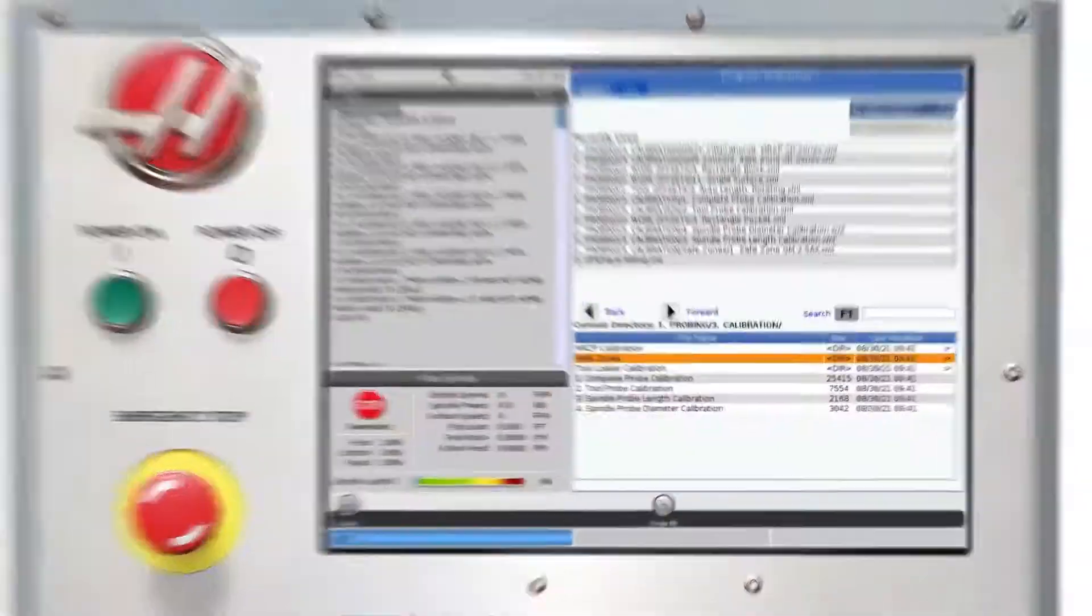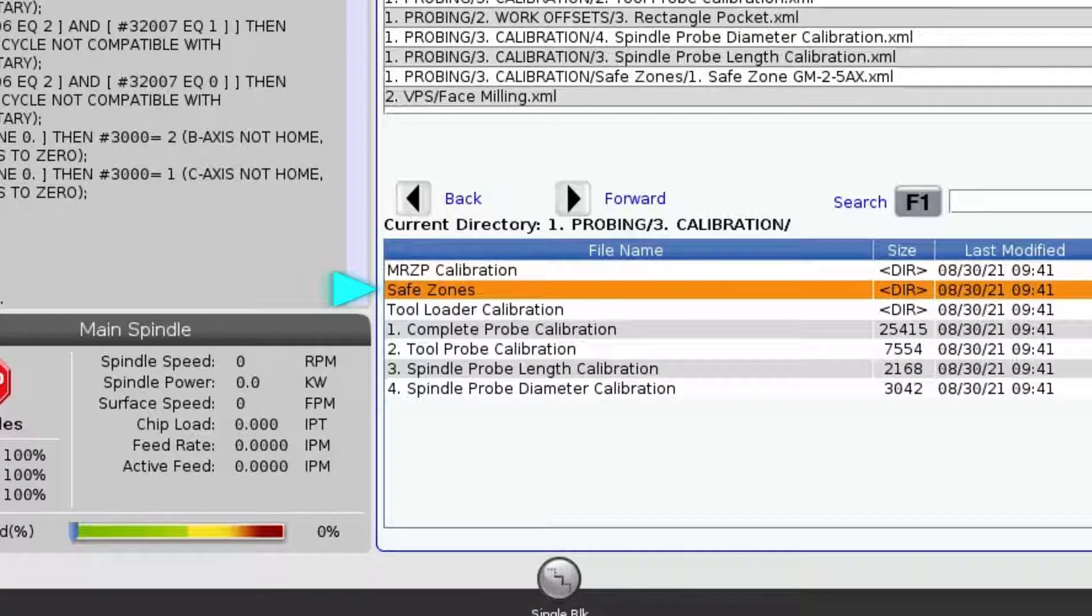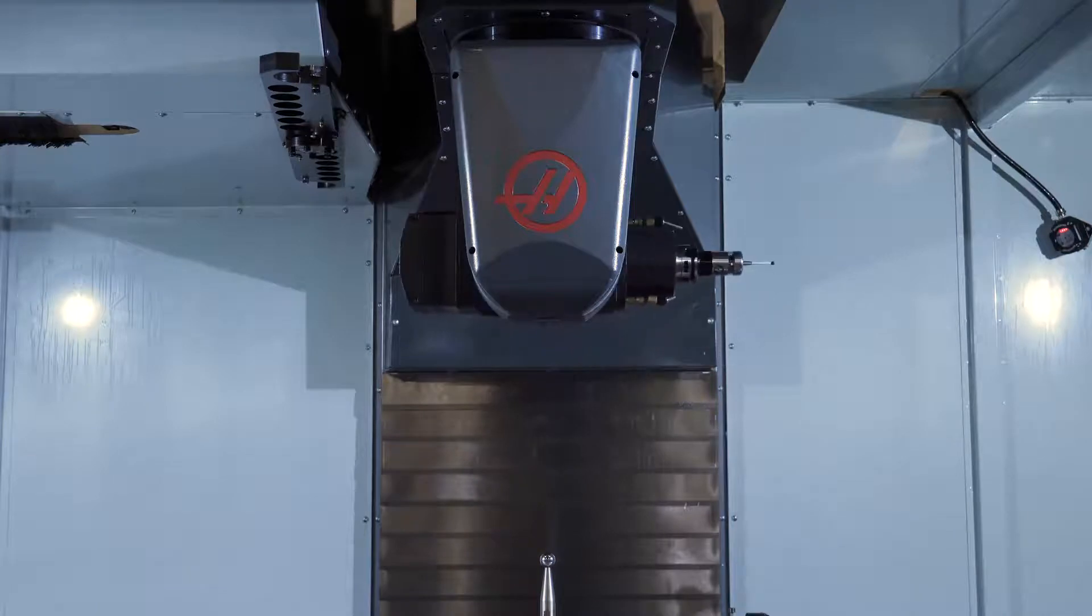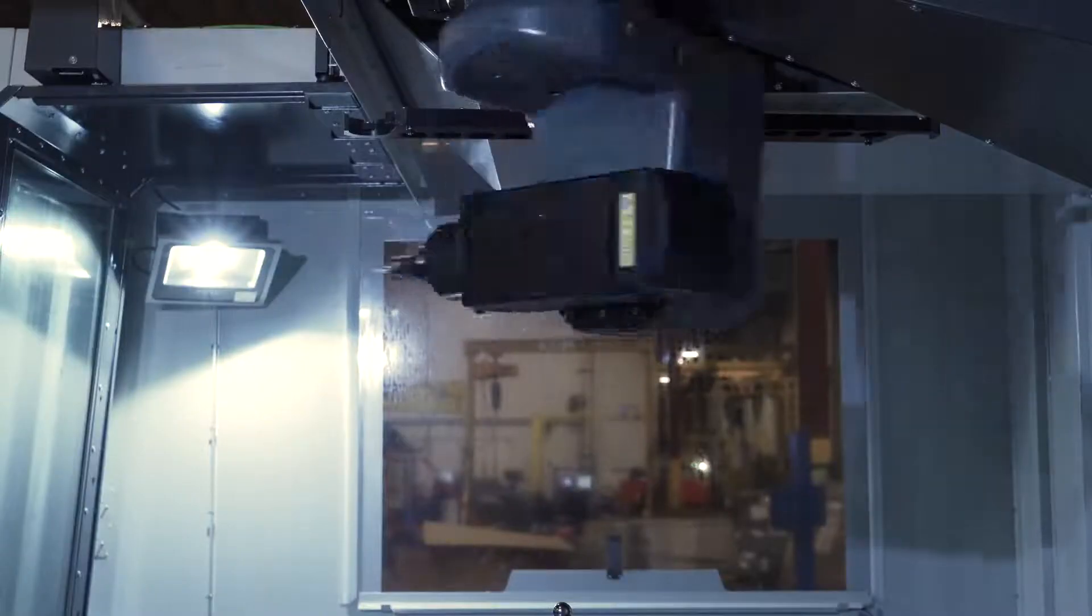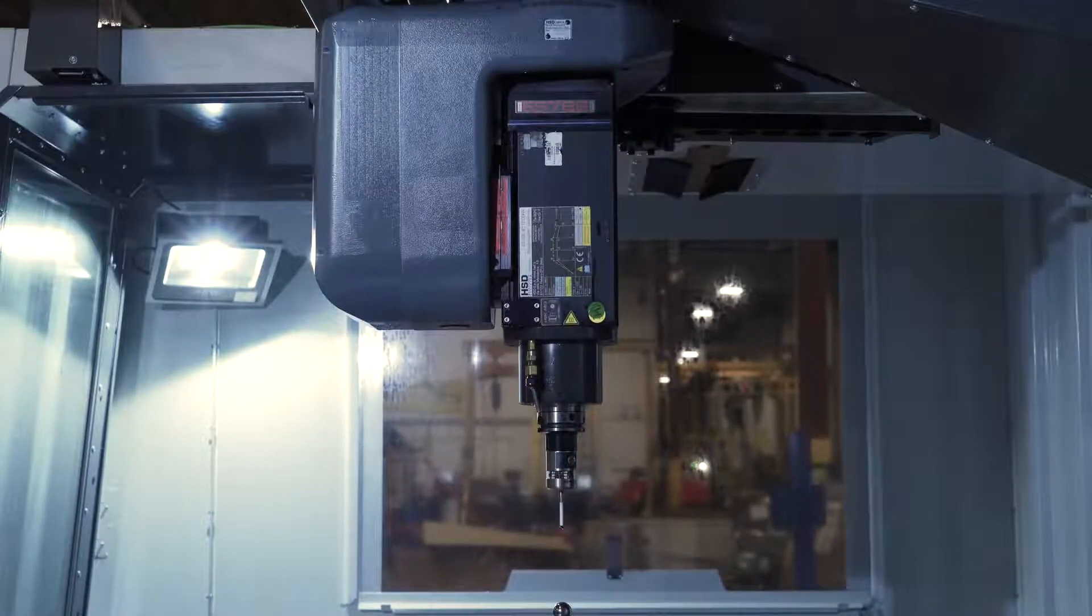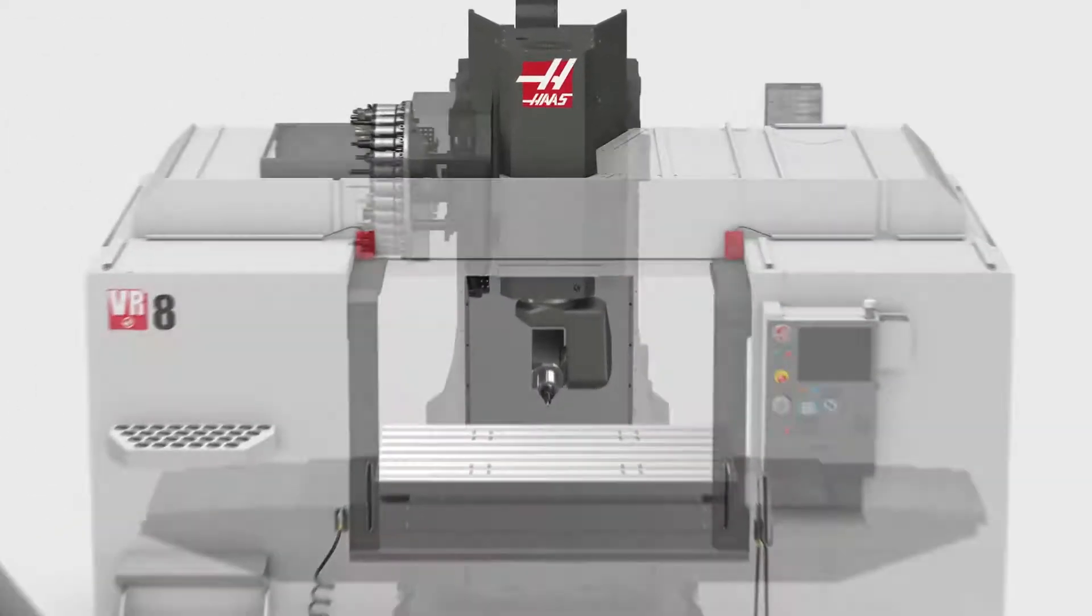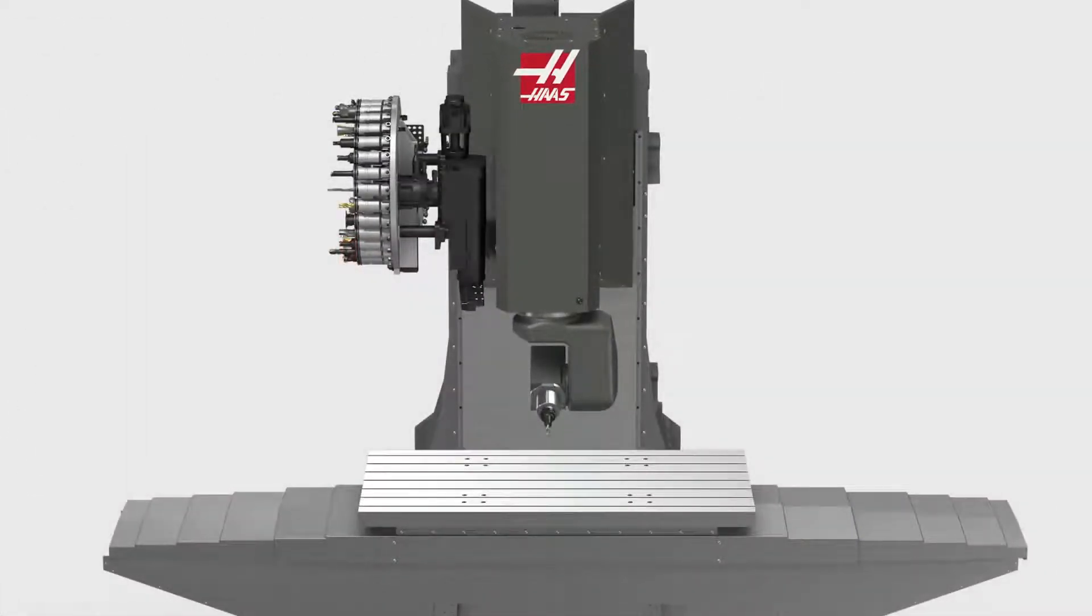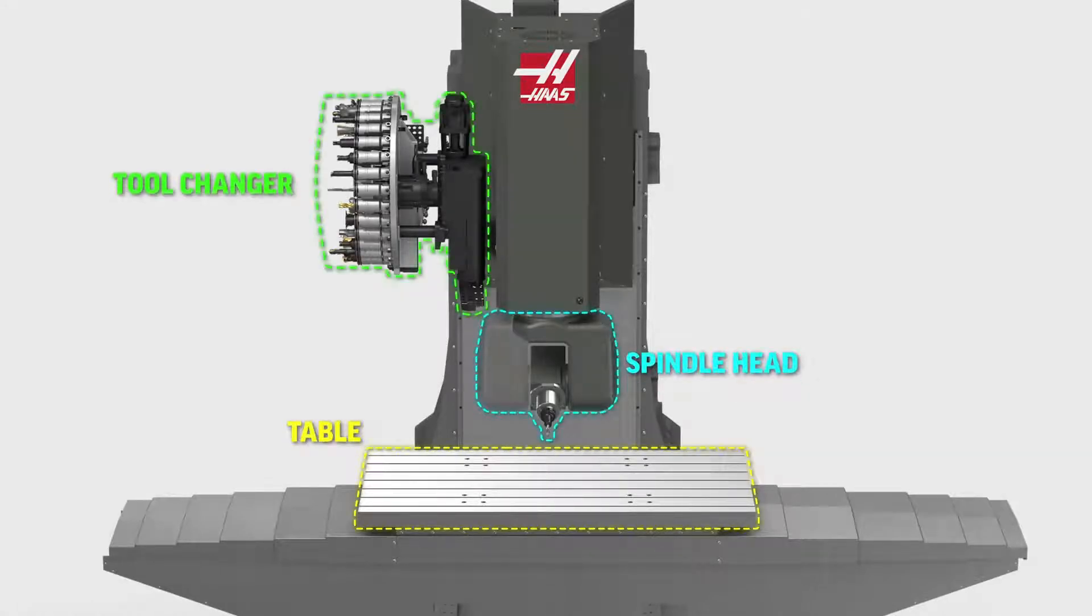Now let's talk about safe zone calibration. Machines like this with a tilting and rotating spindle head that can accept different length cutting tools could crash into itself very easily. To reduce the possibility of such a crash, the machine software has coordinate information on the size and location of permanent elements of the machine like the spindle head, the table, and the tool changer.